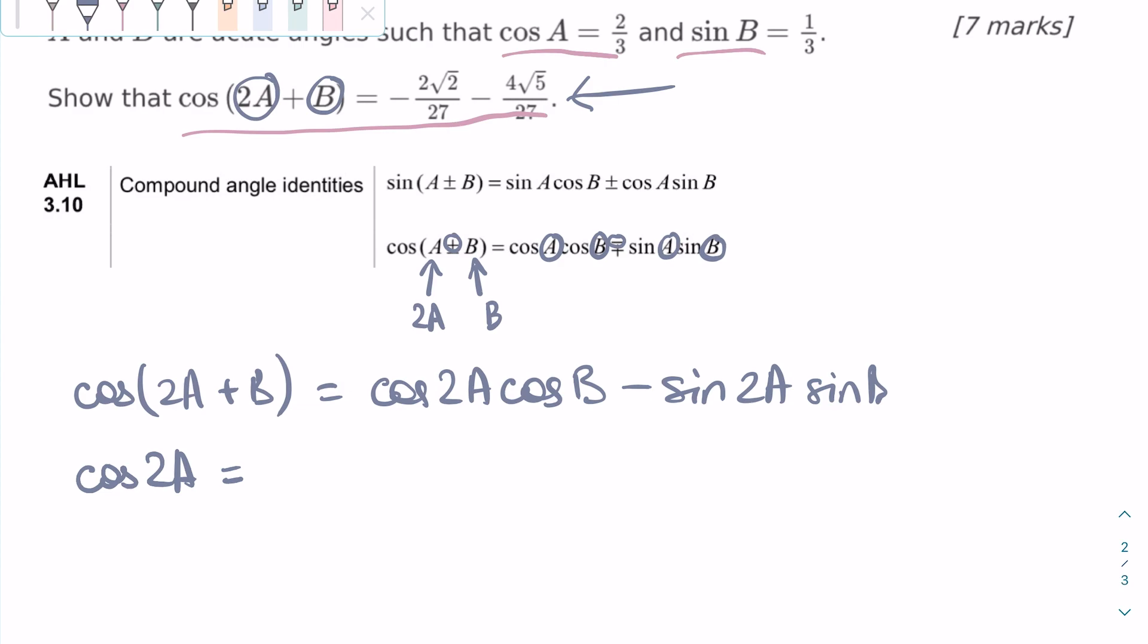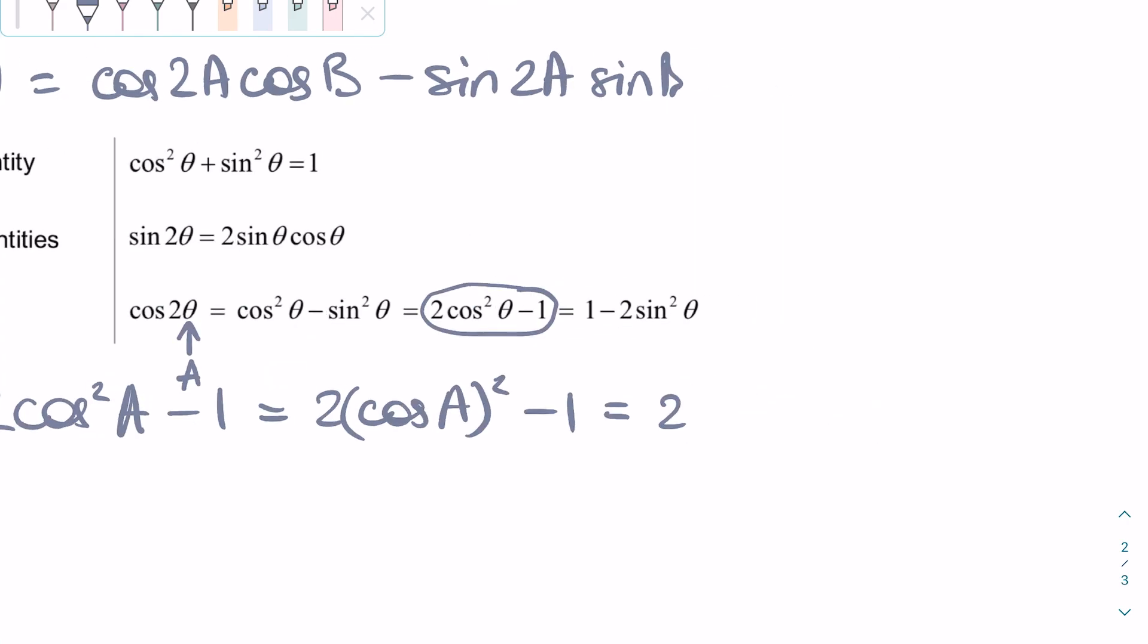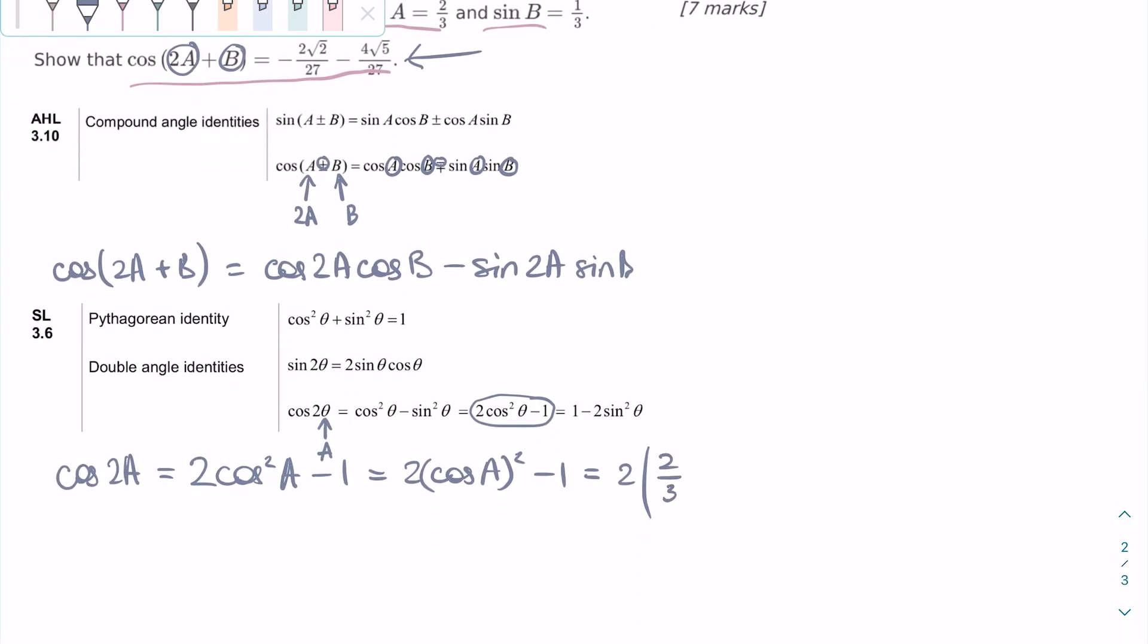To find cosine 2A, we can use another identity found in the formula booklet. We can rewrite the cosine double angle identity with A instead of theta. We can replace cosine of 2A with 2 cosine squared A minus 1. And we will use this identity because we know that cosine A is 2/3, as this is what we were given. So it's easy to replace the expressions with numerical values. What we end up with is that cosine 2A's numerical value is minus 1/9.